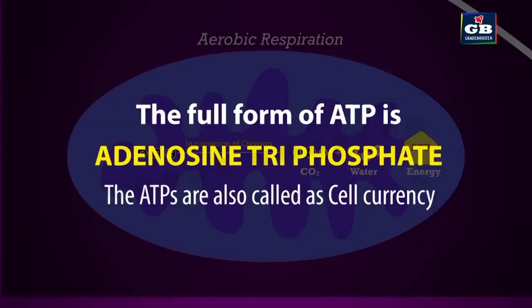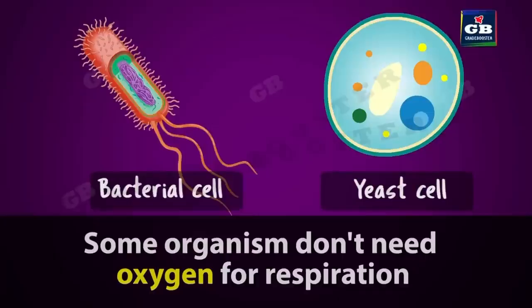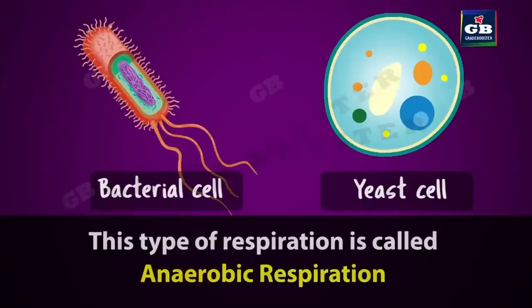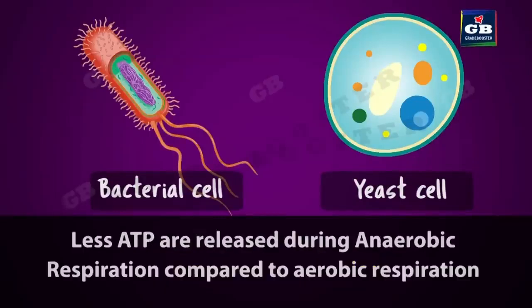These ATPs supply energy to different activities of the cells and are called cell currency. In some organisms, oxygen is not needed for respiration. This type is called anaerobic respiration. However, anaerobic respiration releases fewer ATPs compared to aerobic respiration. Anaerobic respiration is observed in organisms like bacteria and yeast.